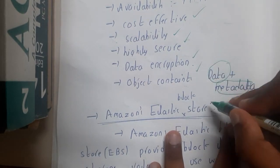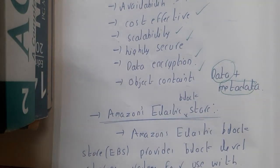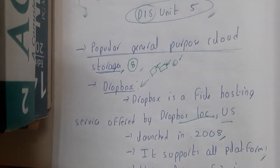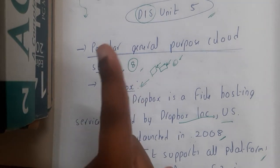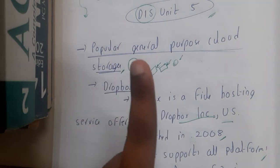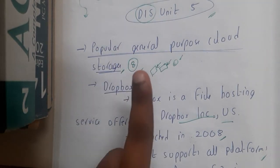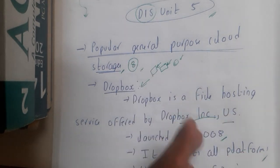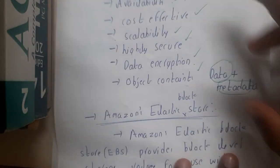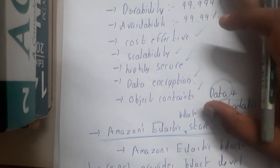This is just an introduction to Amazon S3. It is a storage system where you can store data up to some limit, and it has all these properties.